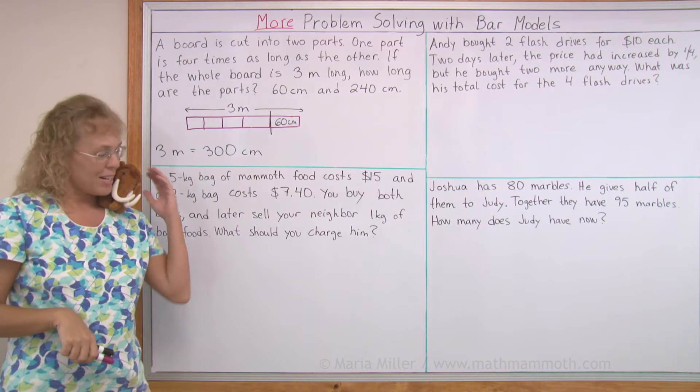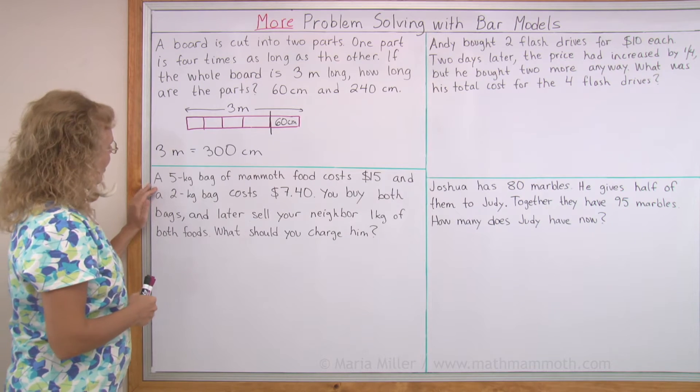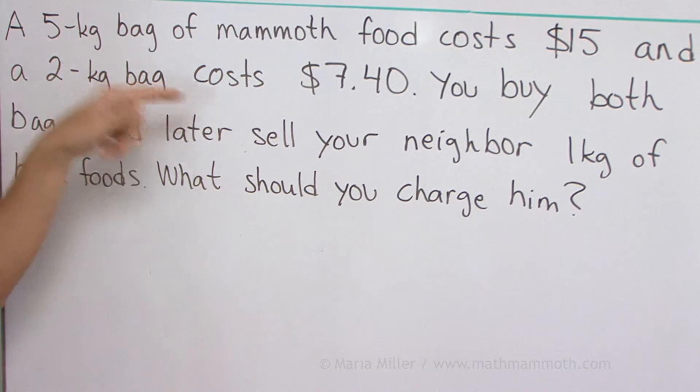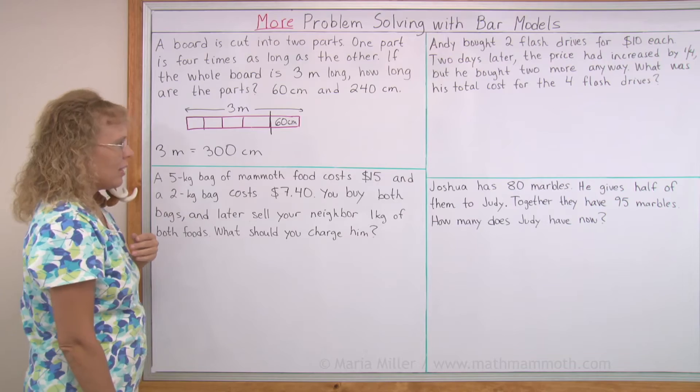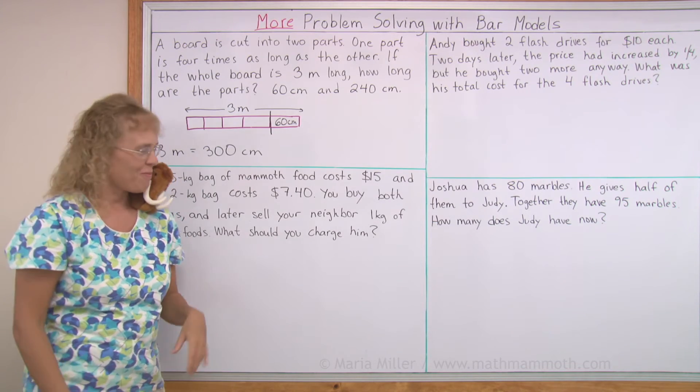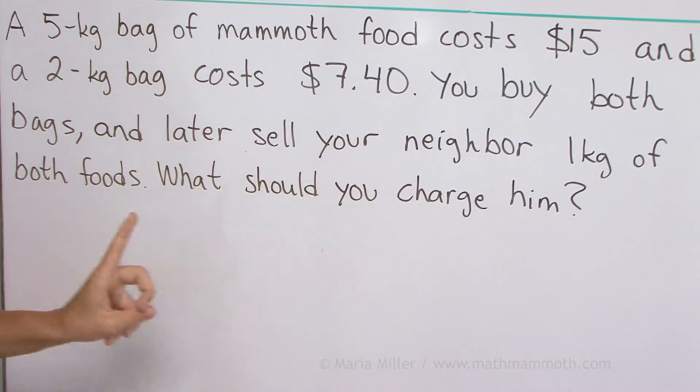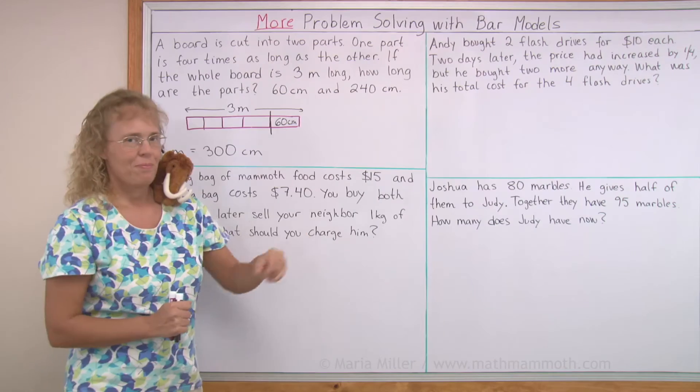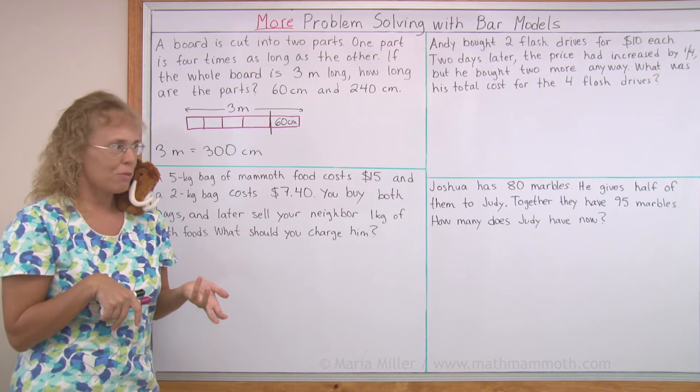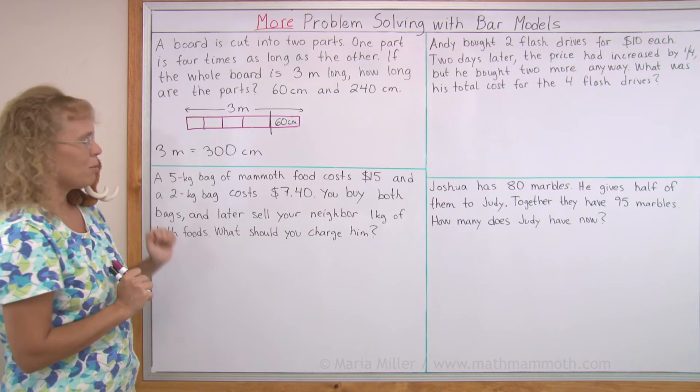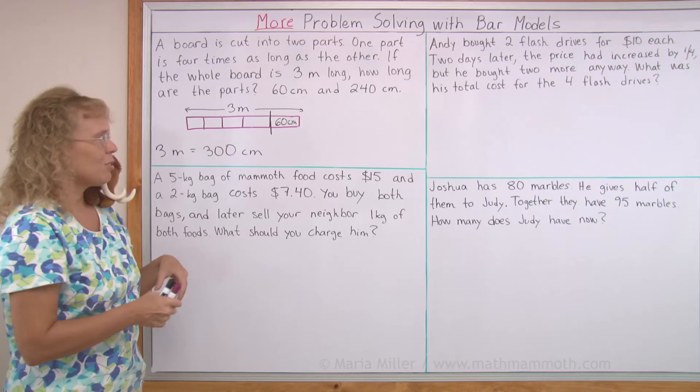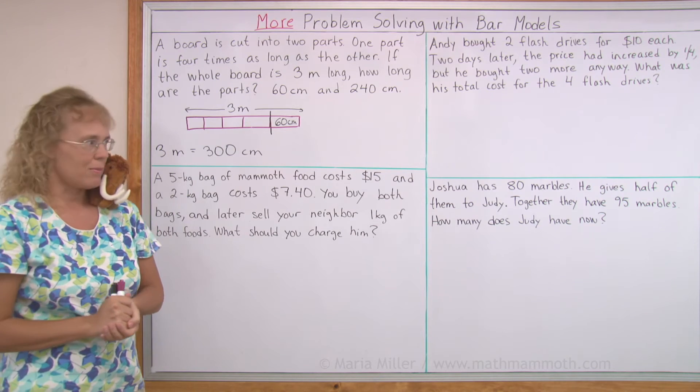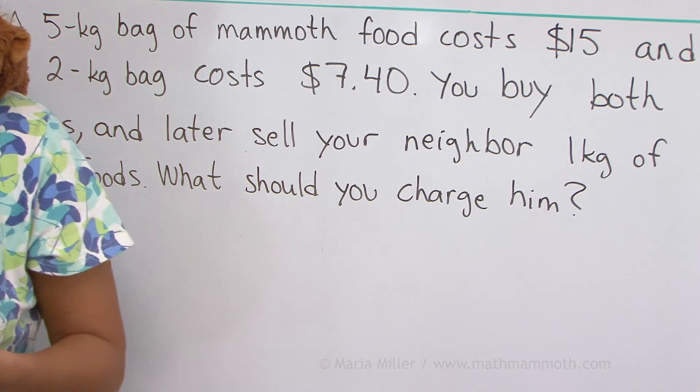Now the next problem is made by Matthew. It has some mammoth food there, see? A five kilogram bag of mammoth food costs $15. And a two kilogram bag costs $7.40. You buy both bags to give to your pet mammoth. And later you sell your neighbor one kilogram of both foods. One kilogram from both bags. What should you charge your neighbor? Okay? So you go buy two bags of mammoth food. One is bigger, one is smaller. Maybe the smaller one is some specialty gourmet food. You buy both bags, and then you sell one kilogram of the one food and one kilogram of the better food to your neighbor. How much should you charge your neighbor? I'm just repeating this so to make sure you understand the problem.